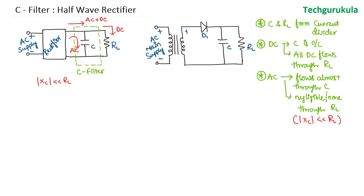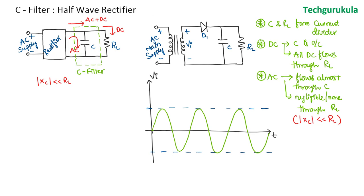Let us look at the input waveform to the rectifier, which is at the output of the secondary winding. The input waveform has a peak value Vm, and on the negative side it is minus Vm. To start with, let me assume that the capacitor is completely discharged — the capacitor holds no charge to start with.